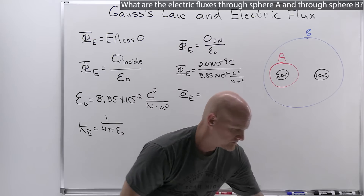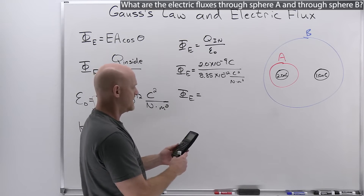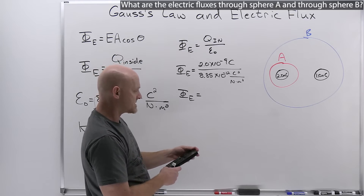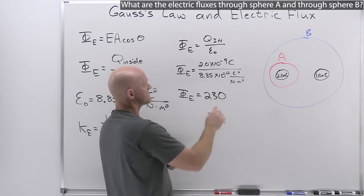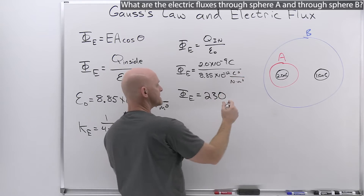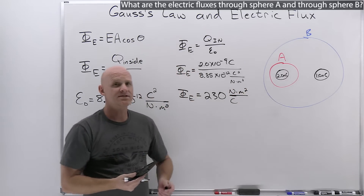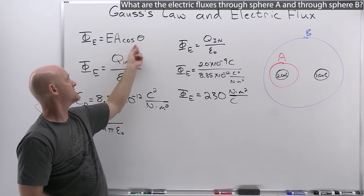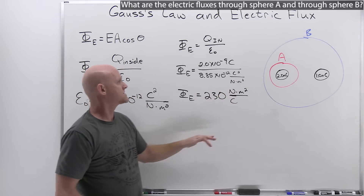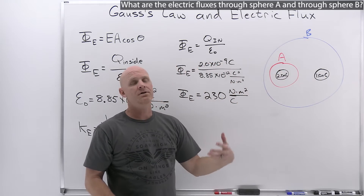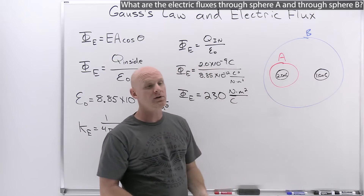Running the calculation: 2 × 10⁻⁹ divided by 8.85 × 10⁻¹² gives approximately 225.99, which rounds to 230 N·m²/C to two significant figures. One of the coulombs cancels, leaving Newton·meter² per coulomb as the SI unit for electric flux — consistent with the first expression where electric field (N/C) times area (m²) gives N·m²/C. For sphere B, it doesn't matter that there are multiple charges; only the total enclosed charge matters, which is 2 + 1 = 3 nanocoulombs.